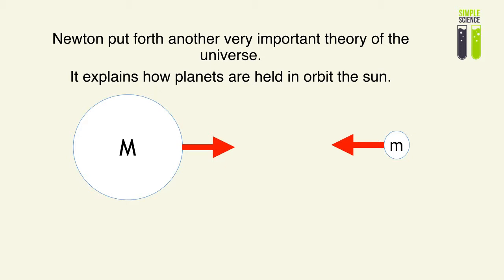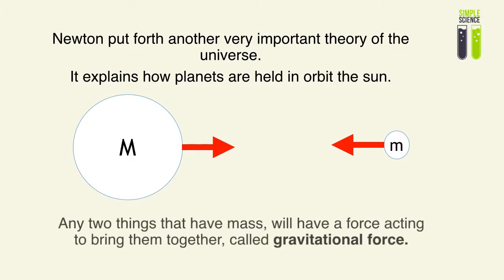It explains how planets are held in orbit around the sun. He postulated that any two things that have mass will have a force acting to bring them together. That force is called the gravitational force. So me and the guy next to me will have a gravitational force between each other — anything that has mass will have a gravitational force between each other.